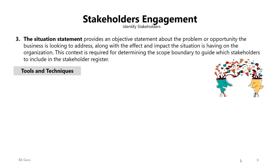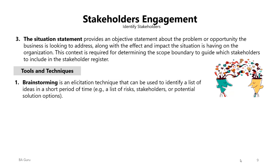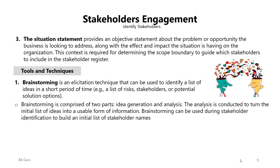There are five tools and techniques used in this process. The first is brainstorming, an elicitation technique used to identify a list of ideas in a short period of time — such as a list of risks, stakeholders, or potential solution options. Brainstorming has two parts: idea generation and analysis. The analysis turns the initial long list of ideas into a usable form of information. Brainstorming can be used during stakeholder identification to build the initial list of stakeholder names.